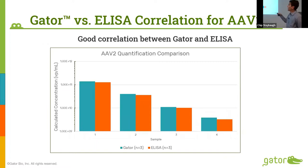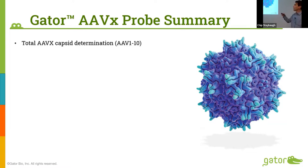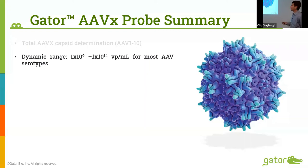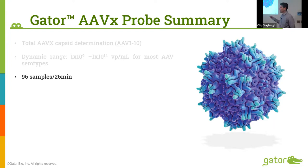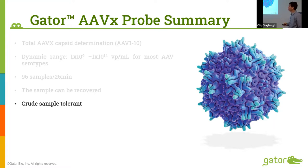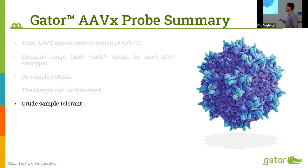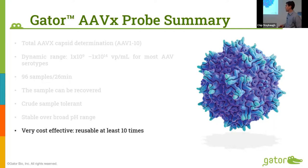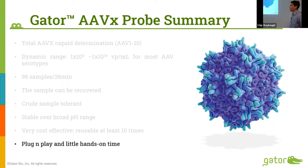ELISA comparison data for four different samples — this is AAV2 — shows strong correlation. In summary, this probe covers capsid quantitation for serotypes 1 through 10 with a five-log dynamic range. You can run 96 samples in less than 30 minutes. After the titer assay, samples can be recovered. It works with purified or crude samples, is stable over a broad pH range, is very cost-effective, can be reused many times for both titer and kinetics, and is plug-and-play with very little hands-on time. Any researcher can become an expert in half a day.